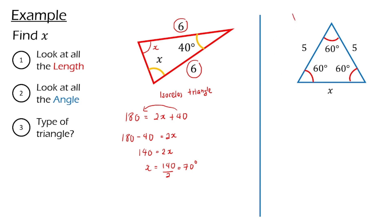For the next question, let's look at the length — we cannot confirm it because the question wants us to find the length. Now let's look at the angle. We can notice that all the corners have the same angle of 60 degrees. With this information, we know that this is an equilateral triangle. We know that an equilateral triangle has the same length on all sides. Therefore, x must be equal to 5 — as simple as that.